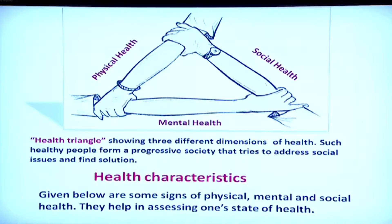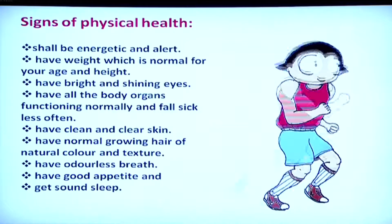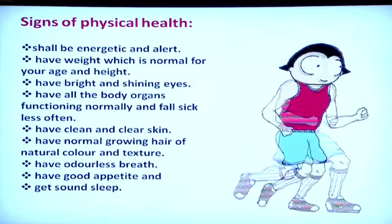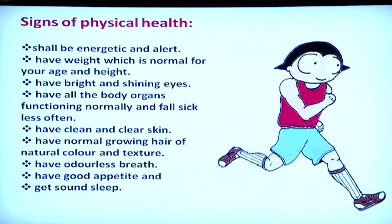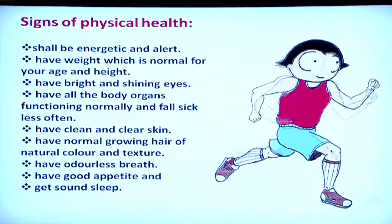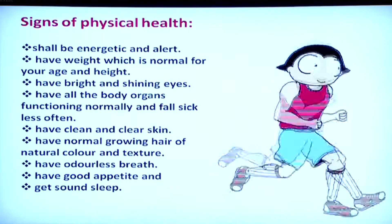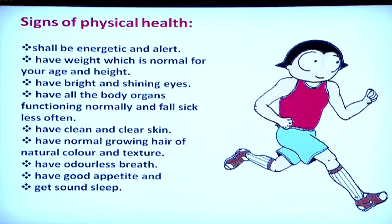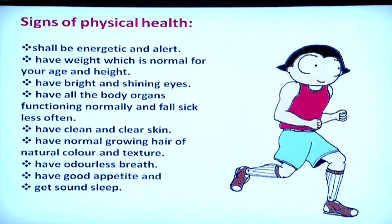What are the health characteristics? How do we recognize whether a person is healthy or not? We will look for these signs in a person. A physically healthy person will be energetic and alert, will have a normal weight for their age and height, will have bright shining eyes, and will have all body organs functioning normally and fall sick less often.